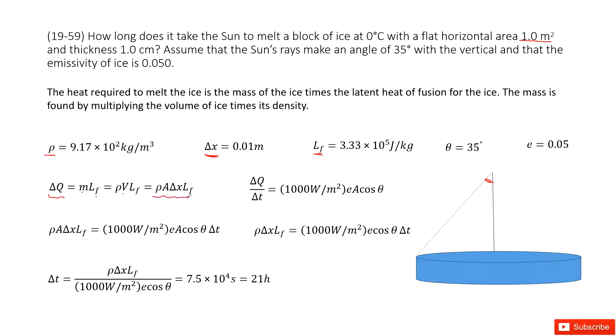Now the energy received: we have the energy received over the time taken, this becomes the power. Equal to the power of the sun per 1 meter squared, which is 10,000 watts. Times the emission constant e, times the surface area of this ice.